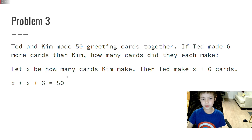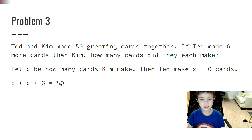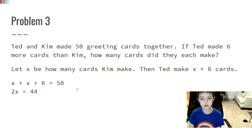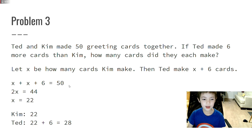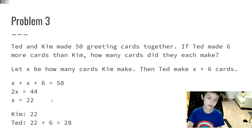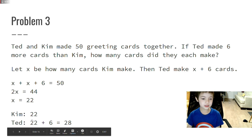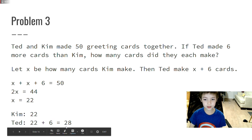That means you want to do X plus X plus 6 equals 50, since 50 is the total number. And then, that means 2X equals 44. And then, X equals 22. So Kim makes 22 cards, and Jon makes X plus 6 equals 28.